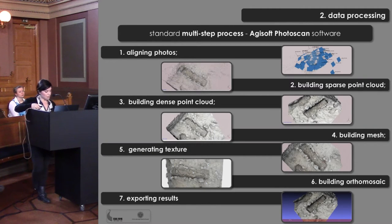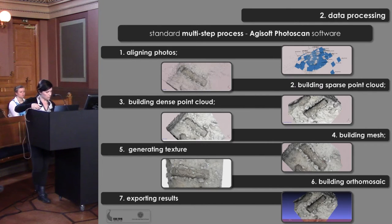Data processing was carried out as a standard multi-step process necessary to build textured 3D models using Agisoft PhotoScan software. The steps of the process are: aligning photos, building sparse point cloud, building dense point cloud, building mesh, generating texture, building orthomosaic, and exporting results.